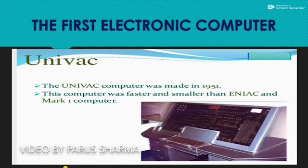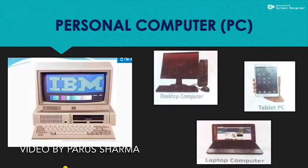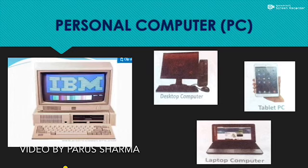After ENIAC, Mauchly and Eckert made UNIVAC — Universal Automatic Computer. It could process both numeric and textual information and was smaller in size than ENIAC and Mark One. Then in 1984, IBM introduced the small computer which we use nowadays — small in size, fast in speed, accurate and reliable. As you can see in this picture, modern computers include desktop computers, tablet PCs, laptops, and mobile phones. This is all for this chapter — I hope you understood. Thank you.